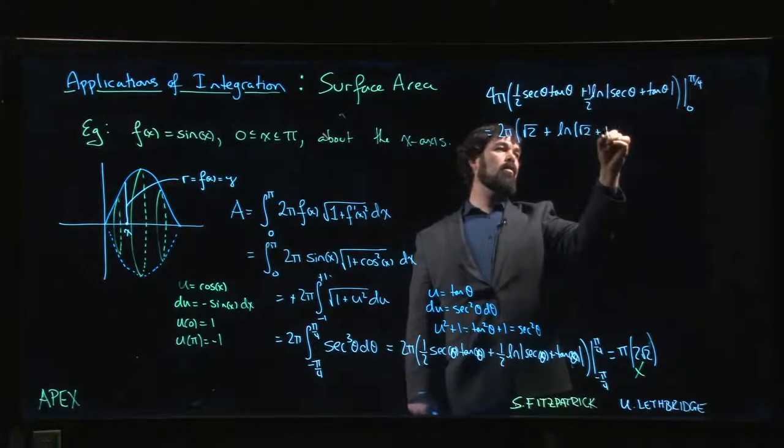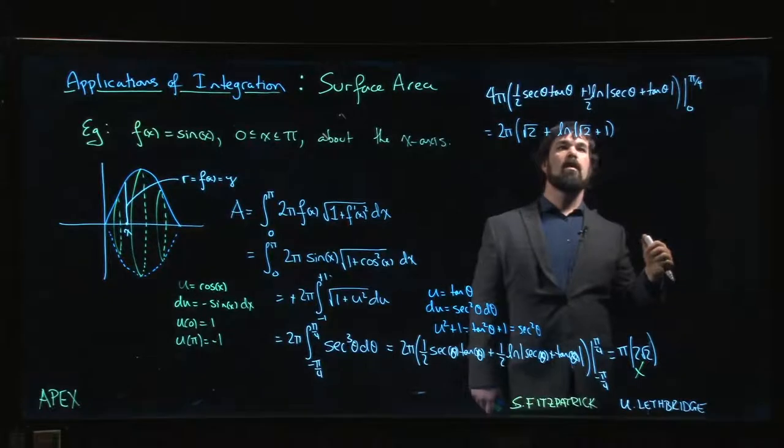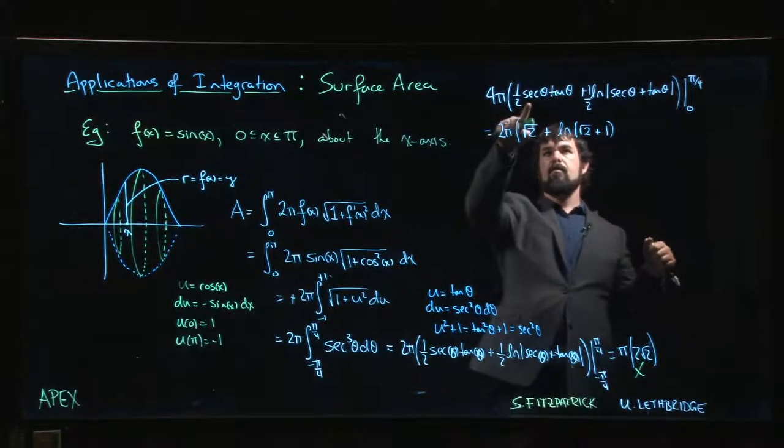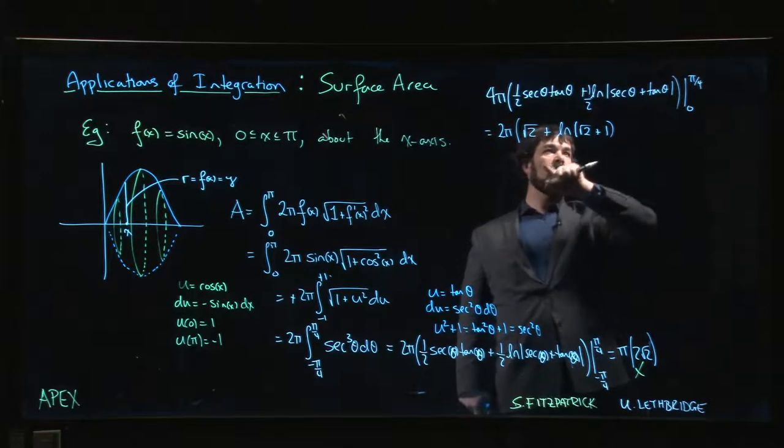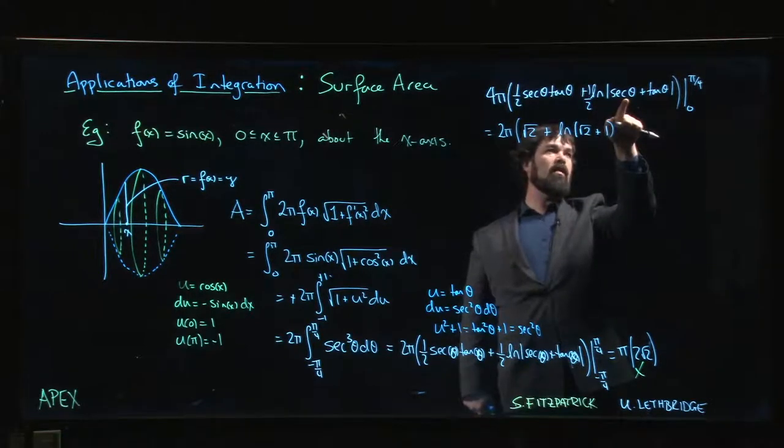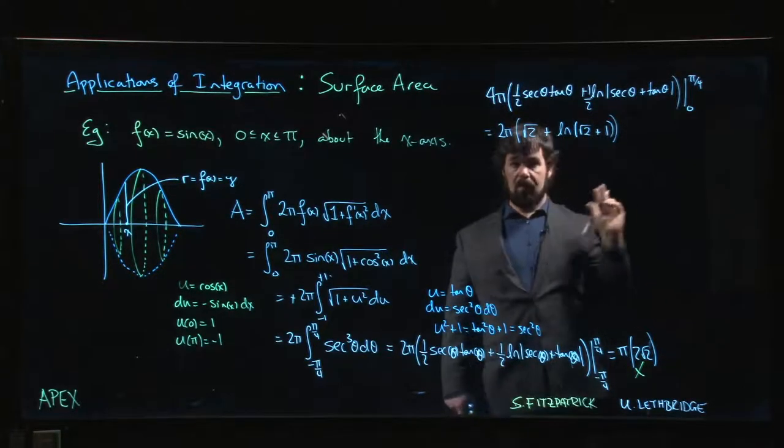For the lower limit, tan of zero is zero so that term vanishes. Secant of zero is one and tan of zero is zero, but natural log of one is zero.